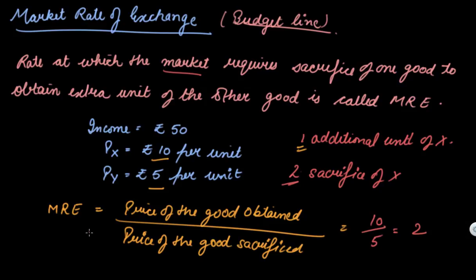The marginal rate of exchange is constant throughout your Px and Py. If you are given a different set of combinations, the marginal rate of exchange will remain constant for good X and good Y. This is your market rate of exchange.